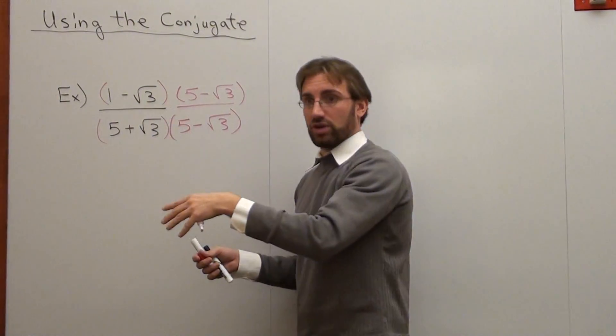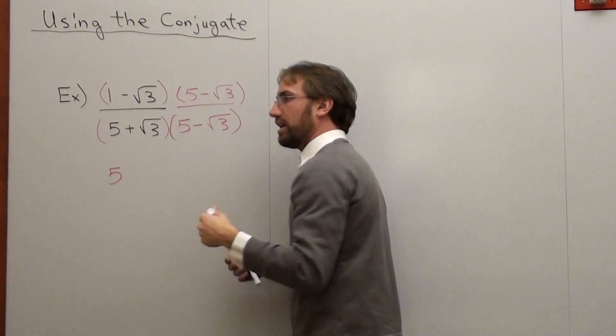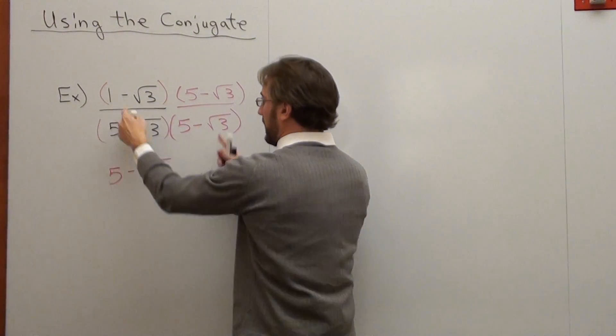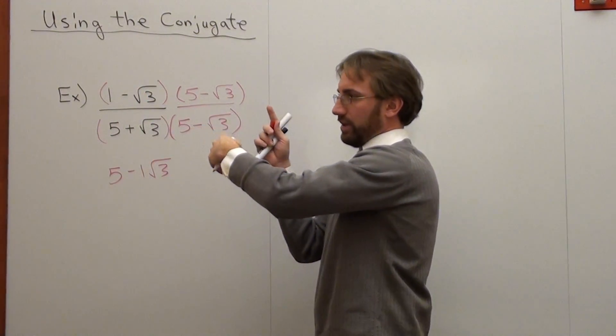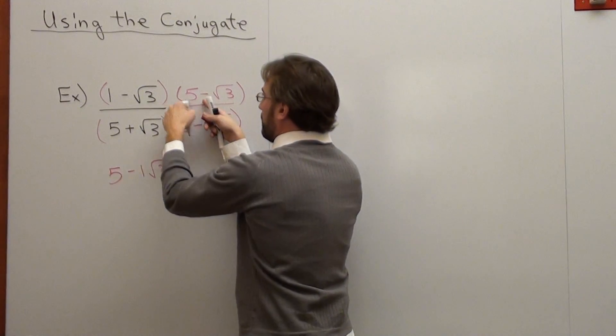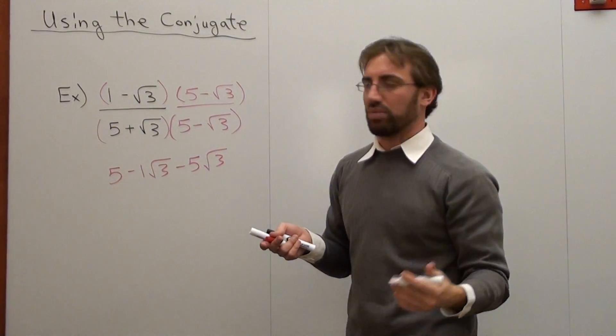So let's do the numerator first. 1 times 5 is 5. 1 times negative square root 3 is negative 1 square root 3. I can't combine them. One's a natural number. The other is a root. Subtracted by 5 root 3. And you want to put the numbers before the roots. It's just more proper to do that.